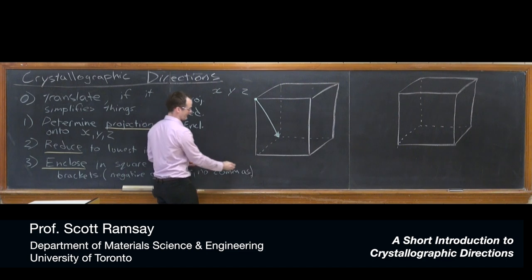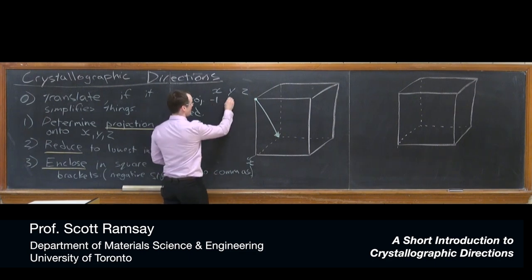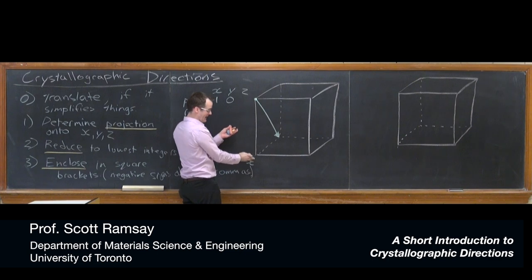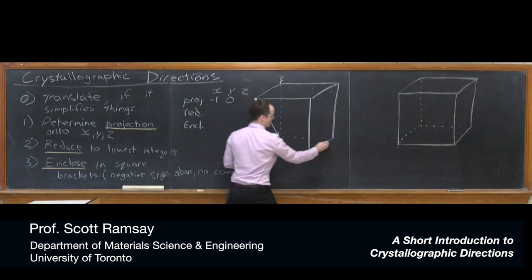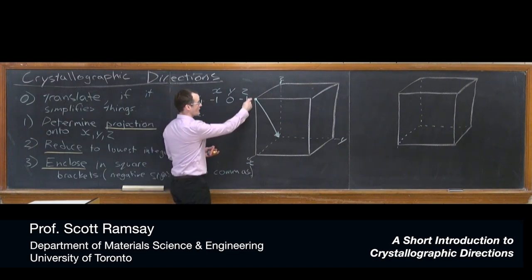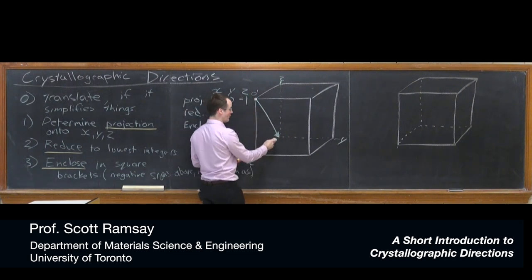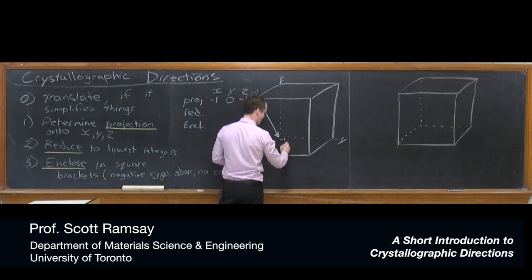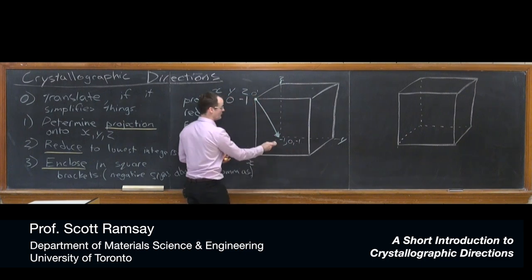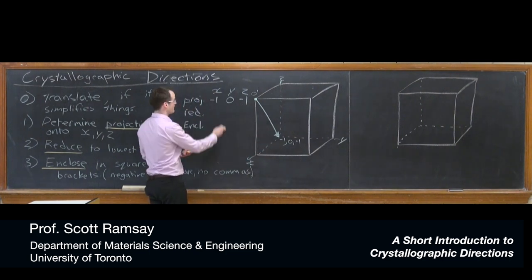So the projection onto the x-axis, remember, this is the x-axis. The projection of that is negative 1. It's 1 in the negative direction, negative 1. Y, there's no component in the y-axis. It's in the x, z plane. This is y over here. And z has a value of negative 1, a projection of negative 1. You could define the origin here, O prime. And then the point coordinates of this point, if that's the origin, are negative 1, comma, 0, comma, negative 1. So you see that the point coordinates of the head of the vector that originates at the origin are the same as the projection.